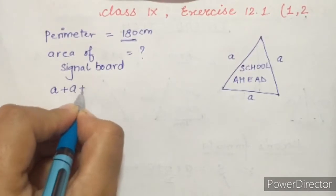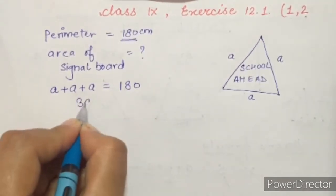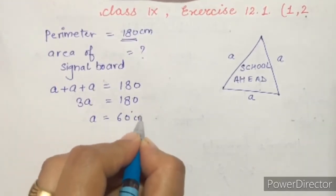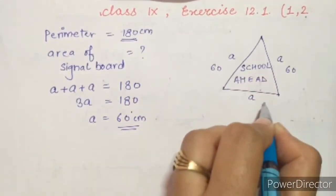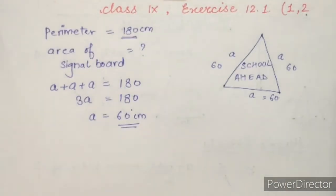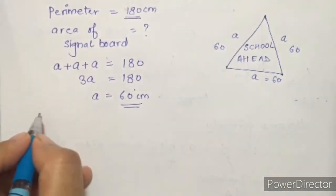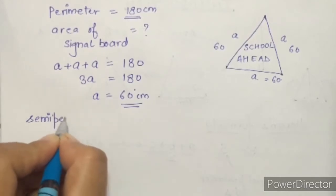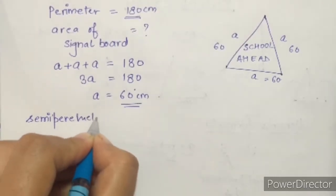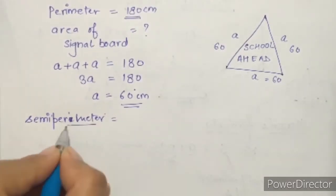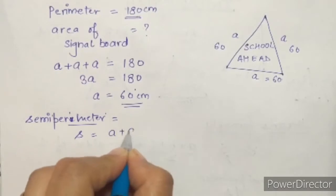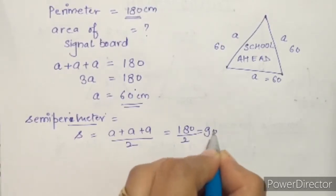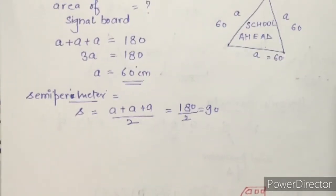Perimeter means a + a + a = 180, so 3a = 180, which means each side is 60 centimeters. Now we use Heron's formula. First, we find the semi-perimeter s = (a + b + c) / 2 = 180 / 2 = 90 centimeters.